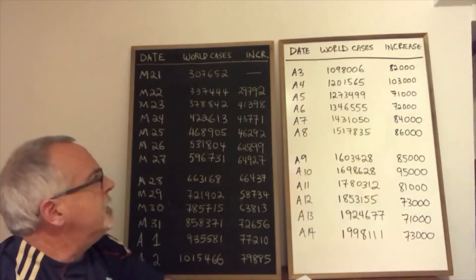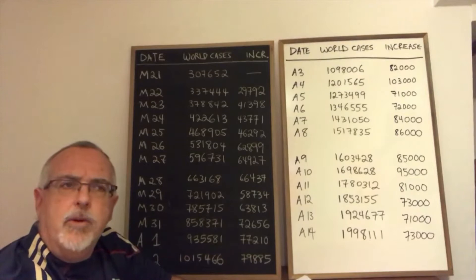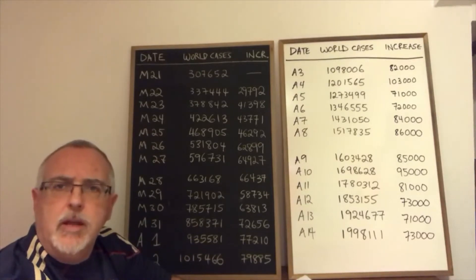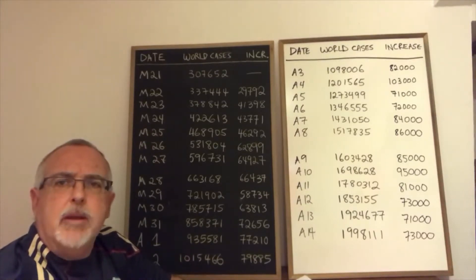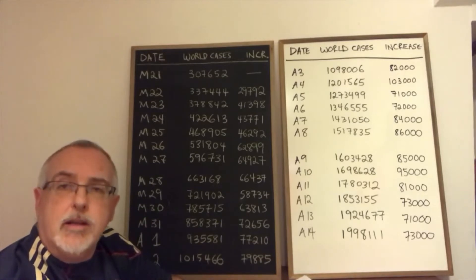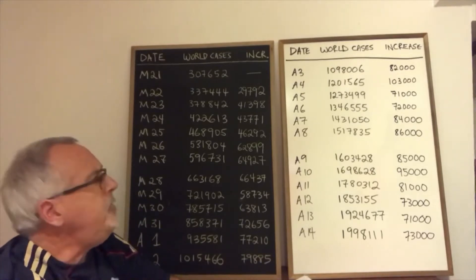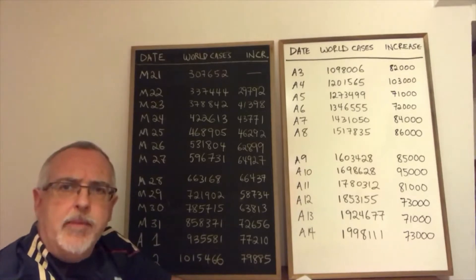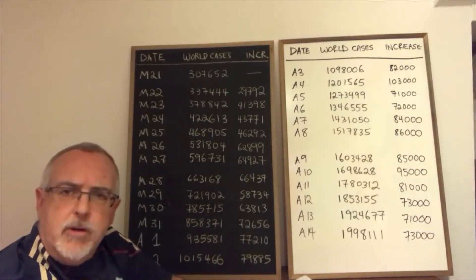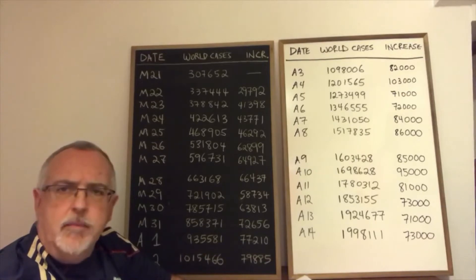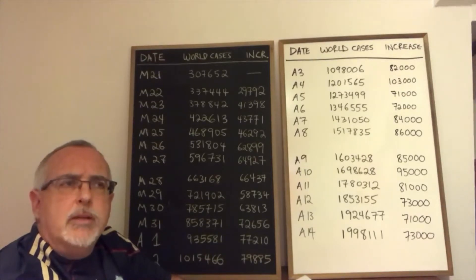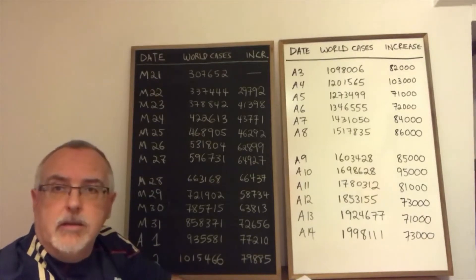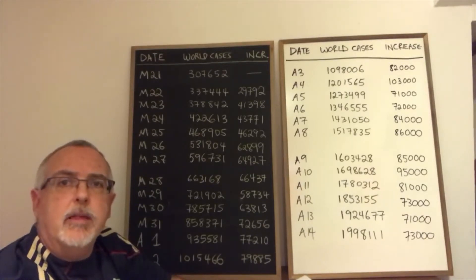Let's look at some of the numbers of confirmed cases of coronavirus and examine how they illustrate exponential growth. Today is April 15th 2020, and on March 21st I was reading an article online in which a scientist was talking about the growth of the cases of the virus. She said that the number of cases was doubling every six days.